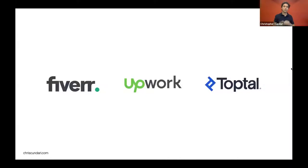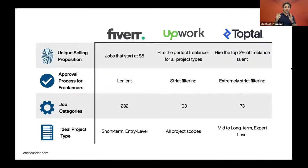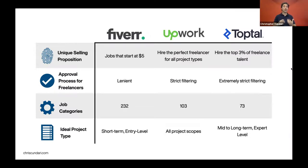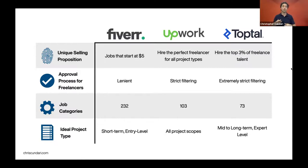The three platforms are Fiverr, Upwork, and TopTal. There are more — in Australia, there's freelancer.com, which is very big — but these three target different types of work. Looking at the unique selling proposition, the approval process, the number of job categories, and the ideal project type: Fiverr is very large with jobs starting at $5. Their approval process is quite lenient — just proof of identity, a driver's license and email confirmation. They have a vast range of job categories from logo creation, graphic design, and business plans. Because they're lenient in the approval process, the talent pool is weaker, and it's meant for more short-term, entry-level projects.